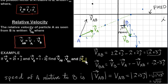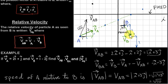The magnitude of VAB is the speed of A relative to B. We can write it as VAB without an arrow. The I component is plus 1 and the J component is plus 3, so by Pythagoras the magnitude is the square root of 1 squared plus 3 squared, which is the square root of 10. So from B's point of view, A appears to have a speed of root 10 meters per second in this direction.